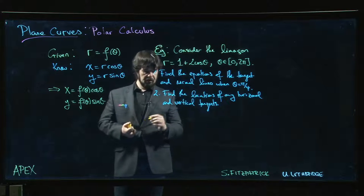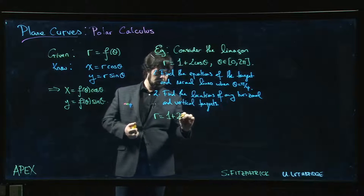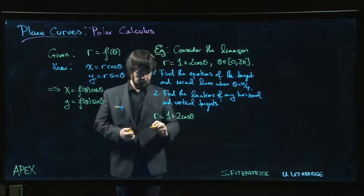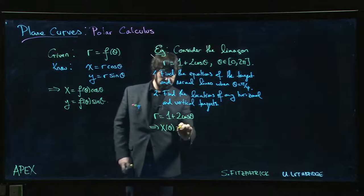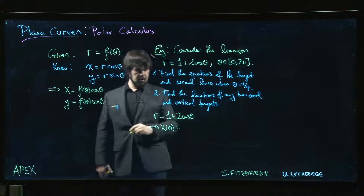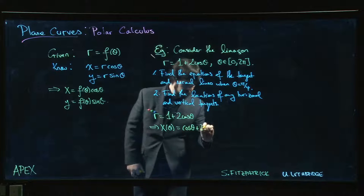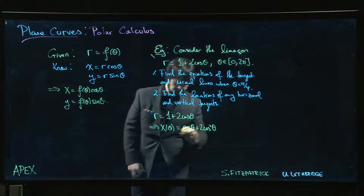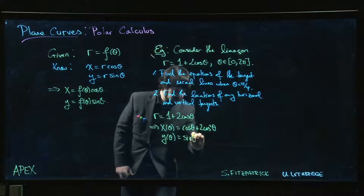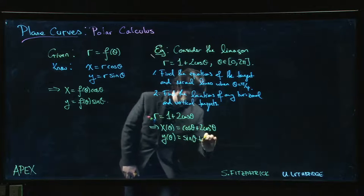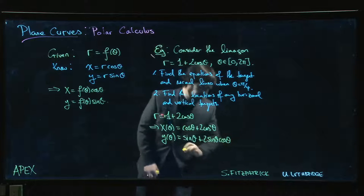So what we have is that r is 1 plus 2 cos theta. So that means that x as a function of theta, we multiply r by cos theta. So we get cos theta plus 2 cos squared theta. Y of theta we multiply by sine. We get sine theta plus 2 sine theta cos theta.